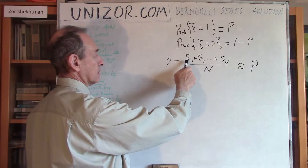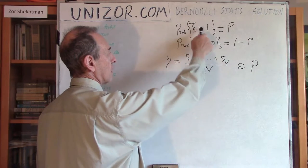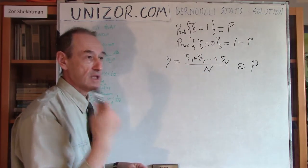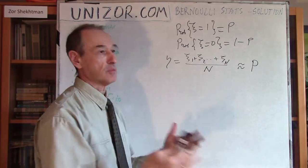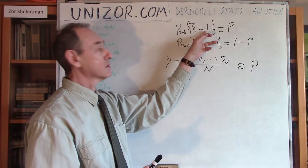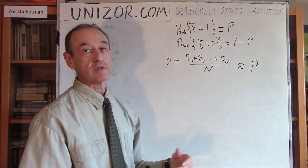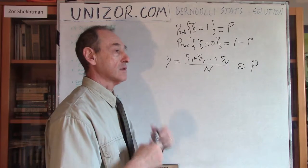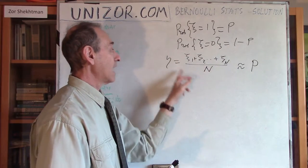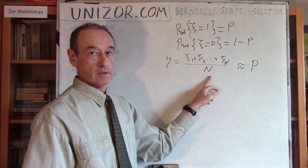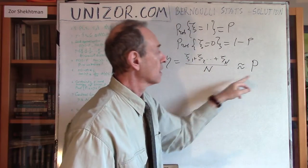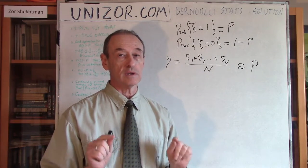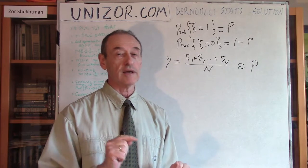Since ξ₁, ξ₂, etc. are equal to either 1 or 0, their sum is the number of times the result equals 1 — that is, the number of times this event occurred. That's why this ratio is exactly the frequency, and that's why I assume it is an approximation of p. The definition of probability says that as I increase N, the frequency is supposed to get closer and closer to the probability. But the word 'closer' is not really well-defined — I have to define it mathematically.